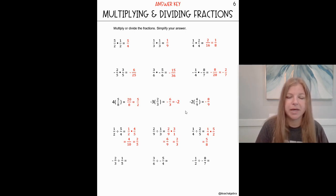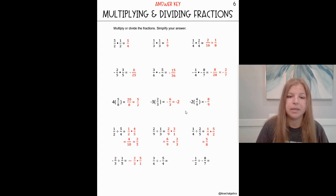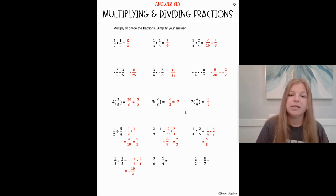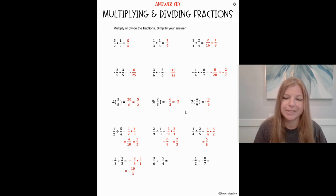Negative two thirds divided by one fifth. We multiply the first fraction by the reciprocal of the second fraction. The reciprocal of one fifth would be five over one. Multiply straight across: two times five is ten, three times one is three. The first fraction is negative, so our answer would be negative ten thirds.